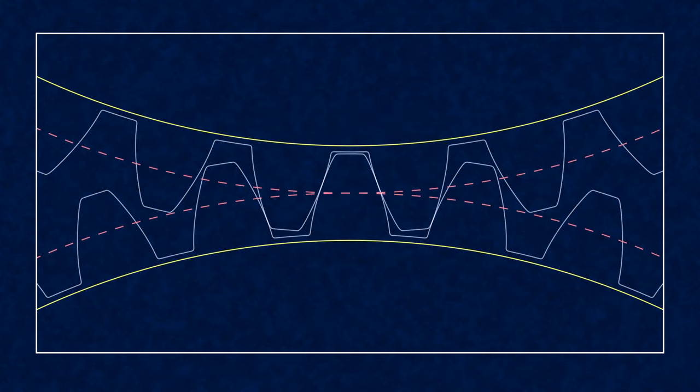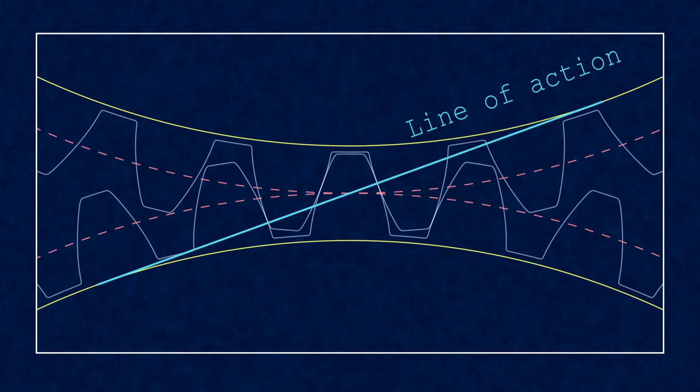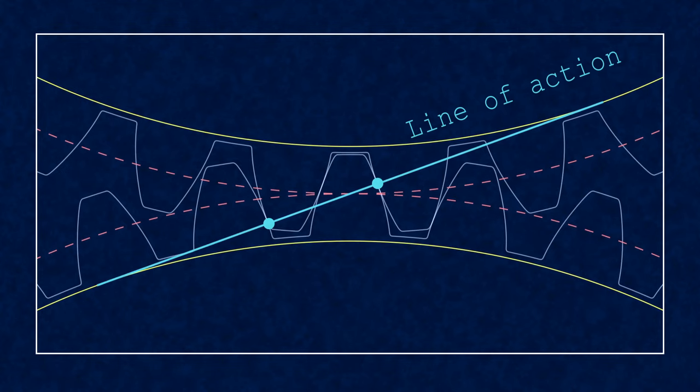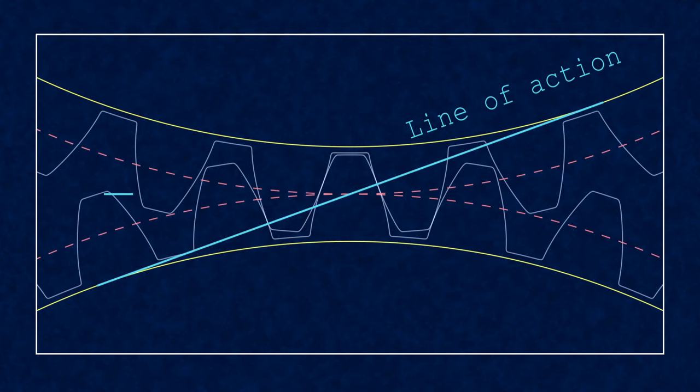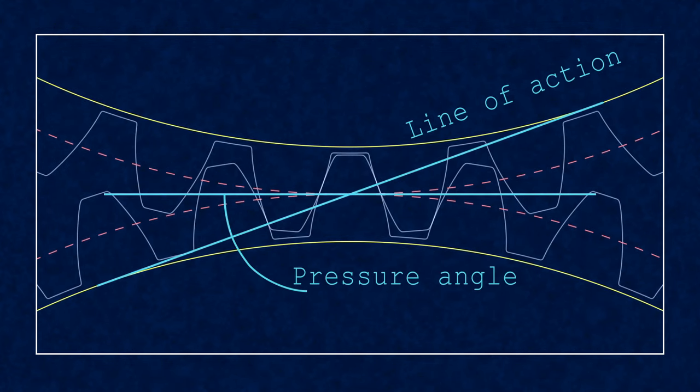We don't have the string anymore, instead what we have is the line of action. The contact point between gears will always lie on the line of action, which is tangent to the base circles. The angle of the line of action relative to the tangent at the pitch circle is called the pressure angle.